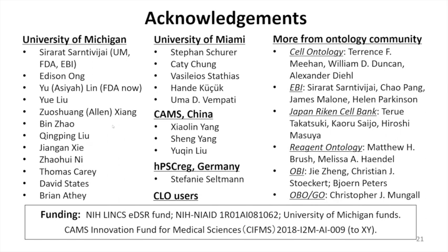Another question: what primary cell types do you capture in CLO? The primary focus is immortalized cell lines — usually not primary cell lines. However, due to some demand, we do include some primary cell lines. The majority are immortalized, like HeLa cells as a typical example. Now we also have thousands of stem cell lines.